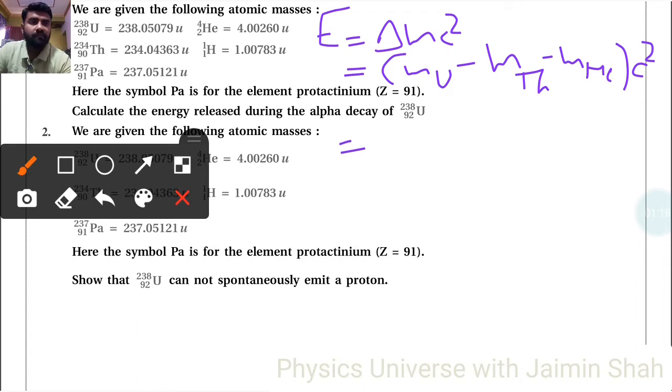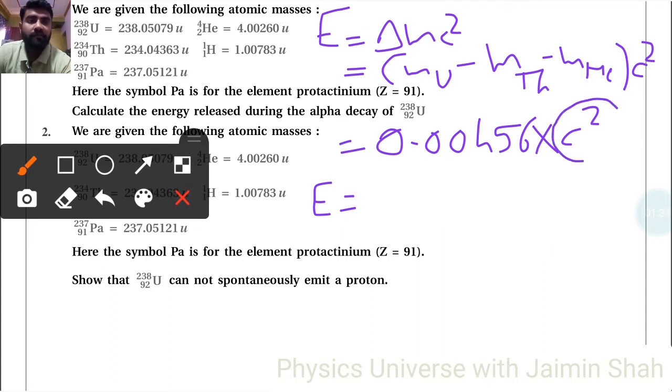So the answer is that mass defect is 0.00456 into c squared. Now we have to find this in the form of mega electron volt in energy. Earlier we found energy for c squared, that is 0.00456 times 931 point mega electron volt for one u.